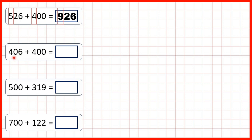Now we have 406 plus 400. Again, if we highlight our hundreds digits, four plus four is eight. But then the zero in our tens and six in our ones will stay the same because we're not adding any tens or ones — we're only adding four hundreds.